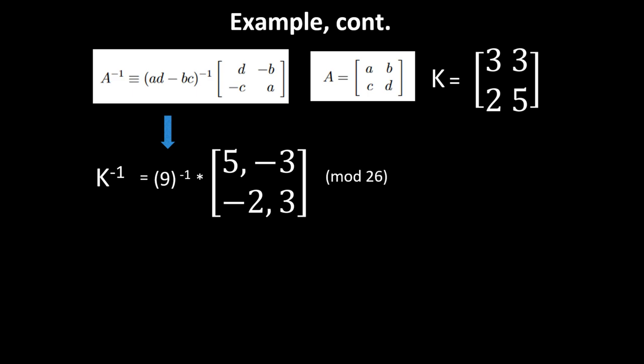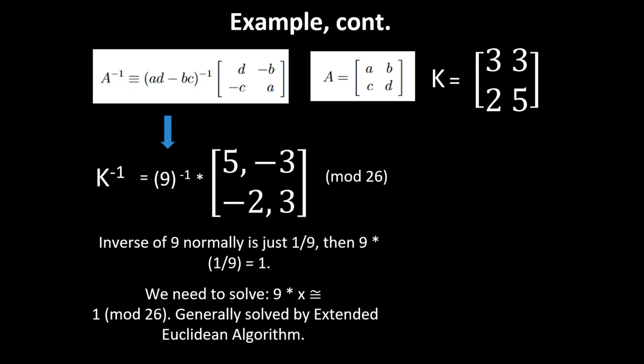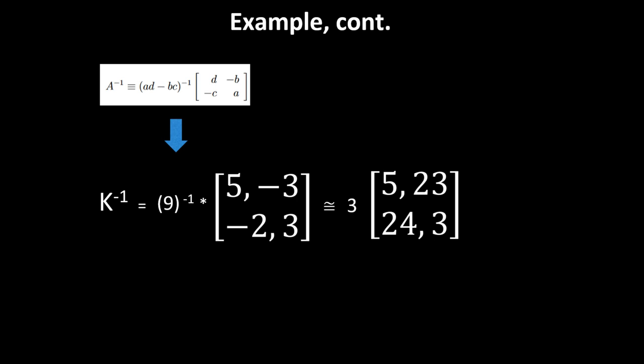9 inverse in the normal case is just 1/9, because if we multiply 9 times 1/9, that's 1. But if we're in modulus 26, we need to find 9*x ≡ 1 (mod 26). This is generally solved by the extended Euclidean algorithm. If you don't know what that is, there are many videos on YouTube. In this case, if we choose x to be 3, we have 9 times 3, which is 27. Modulus 26, we get 1. So the inverse of 9 in modulus 26 is 3.